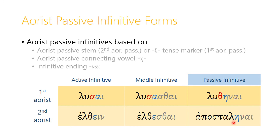Following that stem, in both first and second aorist passive infinitives, we add the same elements seen in the aorist passive indicative. In the first aorist we have the theta tense marker and the eta connecting vowel; in the second aorist the theta is absent and we just use the eta connecting vowel. So the first aorist form is luthēnai, closely resembling eluthēn, and the second aorist gives us apostalaenai — both sharing that same -ēnai ending.